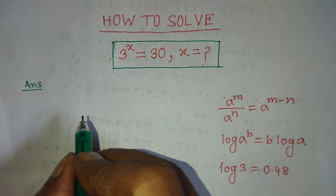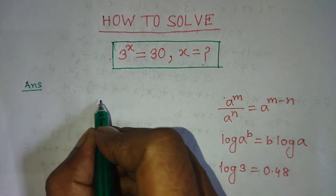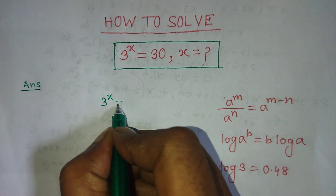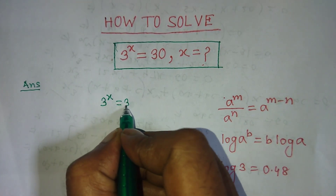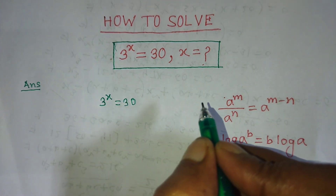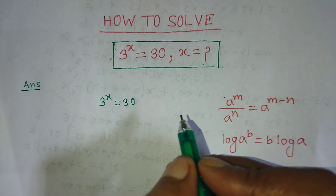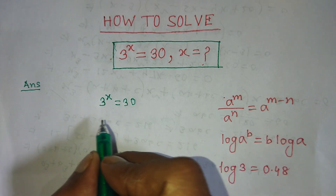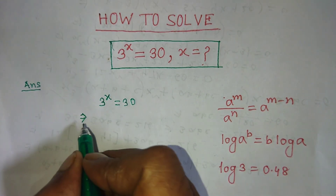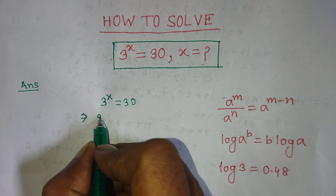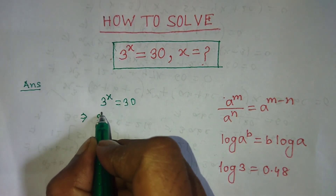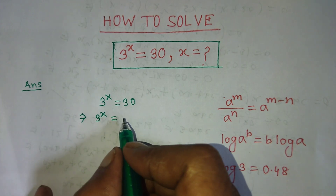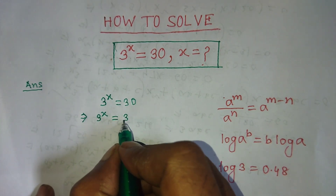Our given exponential equation is 3 to the power x is equal to 30. To find the value of x, we have to write in the place of 30, 3 into 10.